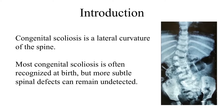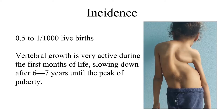We are talking about congenital scoliosis, which is a lateral curvature of the spine. Most congenital scoliosis is often recognized at birth, but more subtle spinal defects can remain undetected. Incidence is 0.5 to 1 per 1000 live births. Vertebral growth is very active during the first months of life, slowing down after the age of six and seven until the peak of puberty. Knowing the active growth periods in child development should aid the surgeon to decide about the proper timing of treatment interventions.